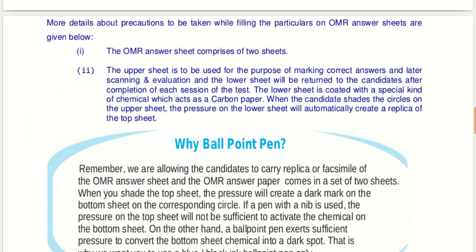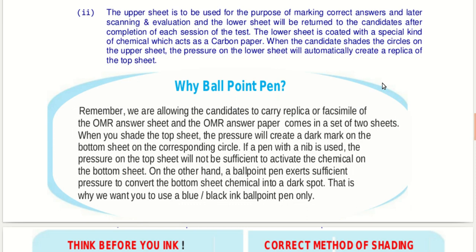The OMR answer sheet comprises two sheets. The upper sheet is used for marking correct answers, scanning, and evaluation. The lower sheet is returned to candidates after each session — it is a carbon copy of the main sheet. The main reason for using ballpoint pen is it creates pressure on the bottom sheet, rightly marking answers in the carbon copy. Please retain this sheet until results are announced, as it serves as evidence if you need to challenge any discrepancy.